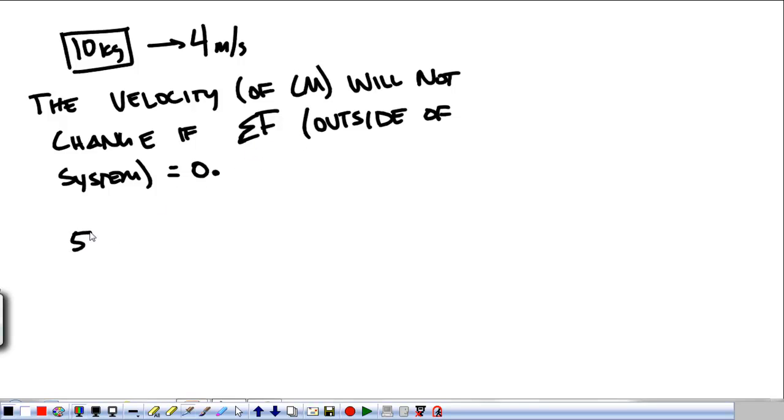That means when he's moving forward at 10, he's moving backwards at—sorry, that's a 5—moving backwards at 2. If they hit and afterwards they stick together, the velocity of the center of mass before is going to be equal to the velocity of the center of mass afterwards.